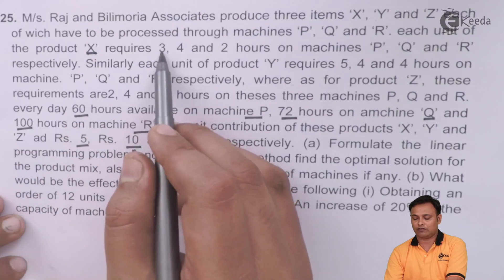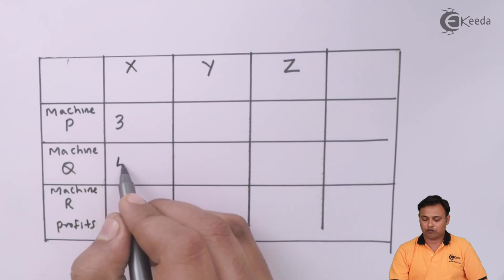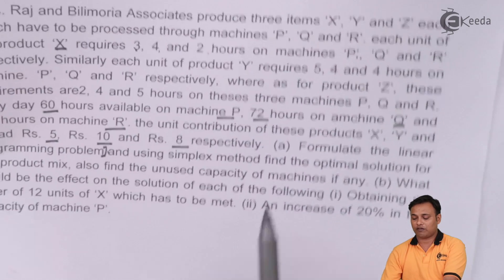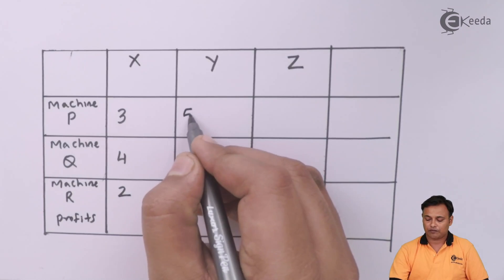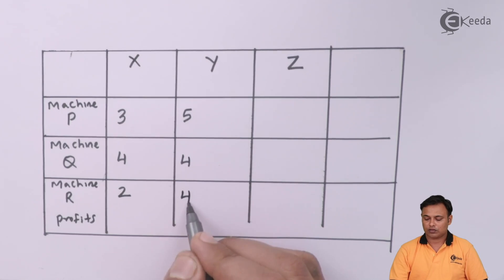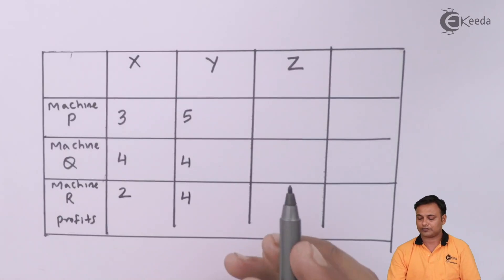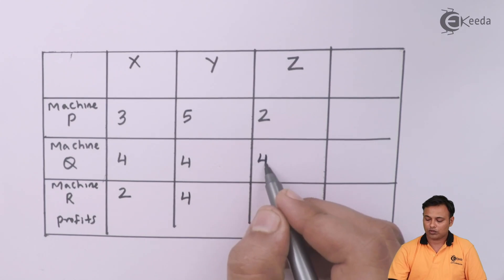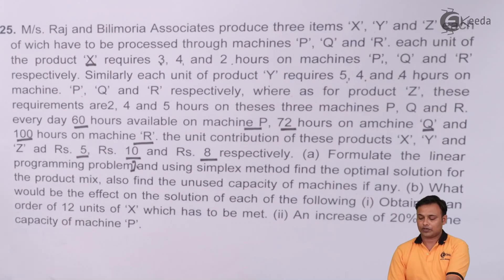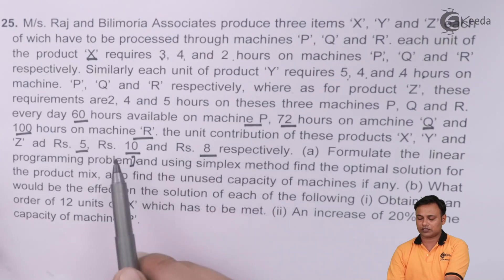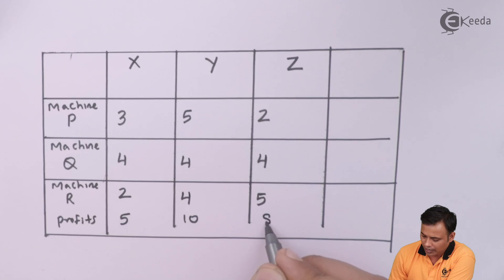So for X, it is 3, 4 and 2 hours on P, Q and R. In case of Y requires 5, 4 and 4 on P, Q and R. Y mein 5, 4 and 4. And in case of Z, it is 2, 4 and 5. And then we are given the profits. So profits for these 3 products or the contribution for these 3 products is 5, 10 and 8. So write down 5, 10 and 8.